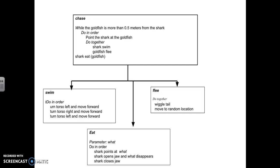So in the swim, do in order: turn the torso left and move forward, turn torso right and move forward, turn torso left and move forward. Then in the flee, do together: wiggle tail and move to a random location.